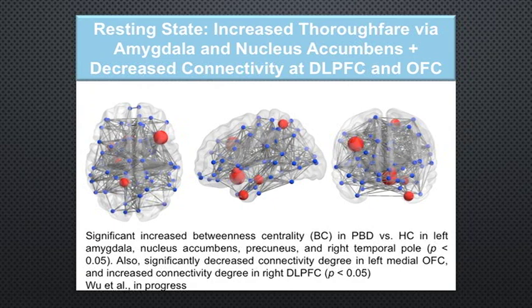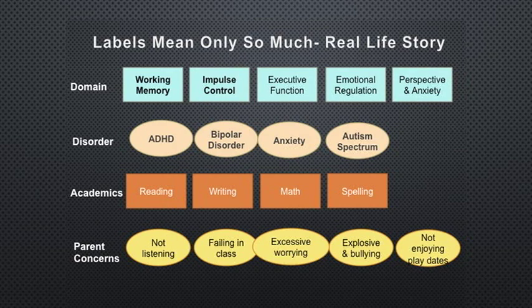Using dynamic causal modeling — which reflects increased centrality of a node or pathway through a certain brain area such as the amygdala — it's an easy way to say: going to New York, the shortest distance through Boston means Boston is overused. In the same way, node centrality in the amygdala as well as the temporal pole and precuneus is greater in bipolar disorder, while it is lowered in prefrontal areas. The prefrontal areas are not engaged. Even at resting state, these areas are being shown as affected. The labels mean only so much — working memory problem, impulse control, executive function. Psychiatrists call them ADHD, bipolar disorder, anxiety, autism. Academics call it reading disorder, writing, math, spelling. Parents say they're not listening, failing in class, excessively worrying, bullying, not enjoying play dates, being explosive.